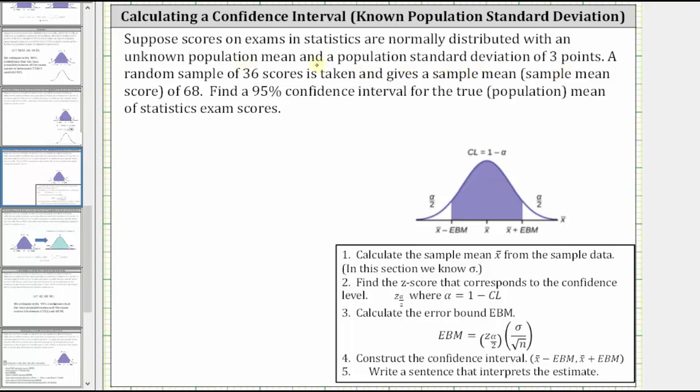Suppose scores on exams in statistics are normally distributed with an unknown population mean and a population standard deviation of three points. A random sample of 36 scores is taken and gives a sample mean of 68. Find a 95% confidence interval for the true population mean of statistics exam scores.